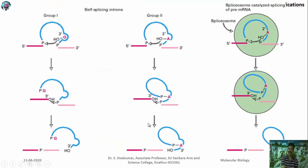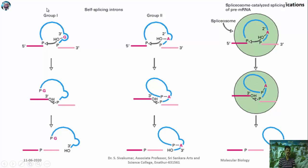In eukaryotic rRNA, two types of splicing are possible: group 1 intron splicing and group 2 intron splicing. In group 1 splicing, an external guanosine residue is added to the 5' end of the intron. A phosphate is created at the 5' end to which the external guanosine is attached. Then the 3' end of the upstream exon is joined to the 5' end of the downstream exon and the intron is released.